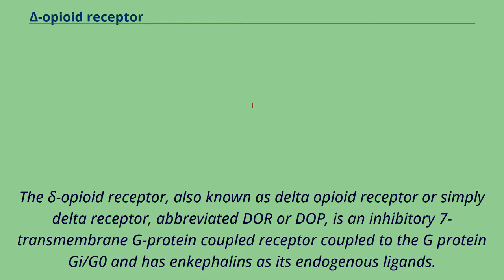The Delta Opioid Receptor, also known as Delta Opioid Receptor or simply Delta Receptor, abbreviated DOR or DOP, is an inhibitory 7-transmembrane G-protein-coupled receptor coupled to the G-protein Gi/G0 and has enkephalins as its endogenous ligands.